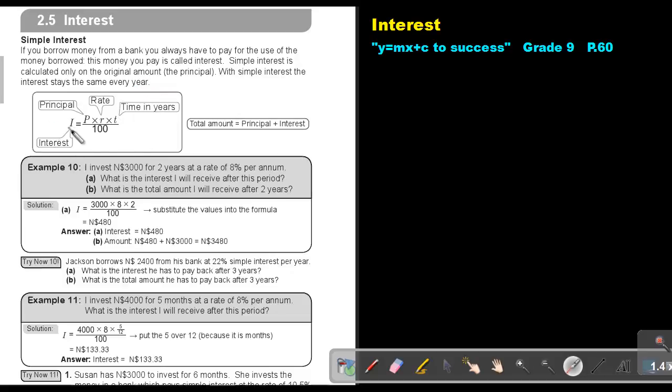So here is the formula. This is the interest. This is the principal. This is the rate. And this is the time in years. And I divide by 100 because this is percentage. So the total amount is the principal plus the interest.